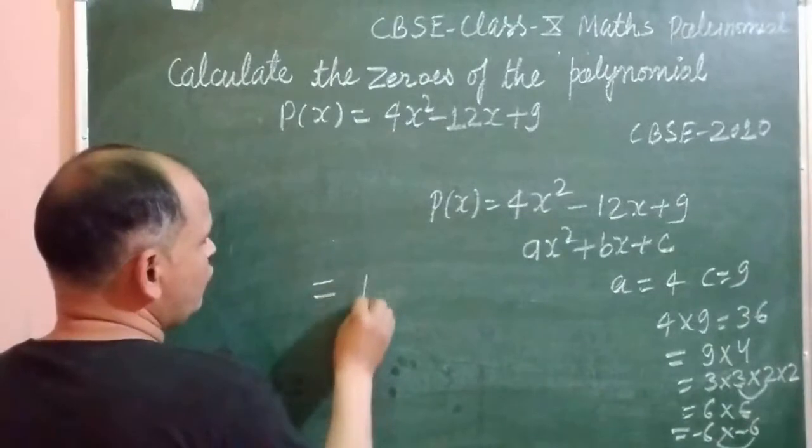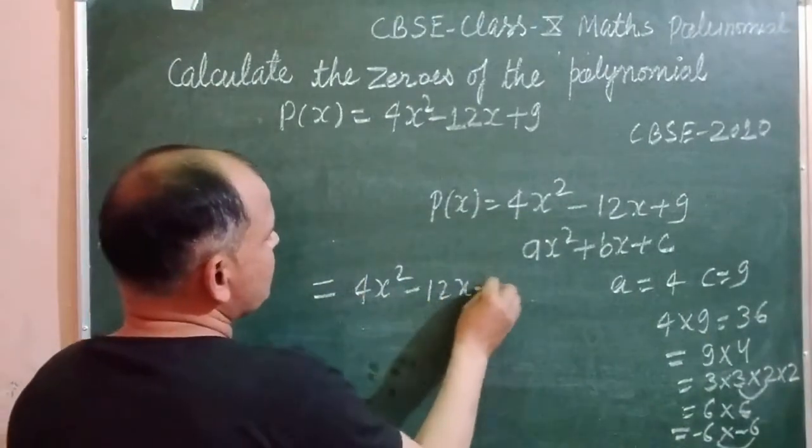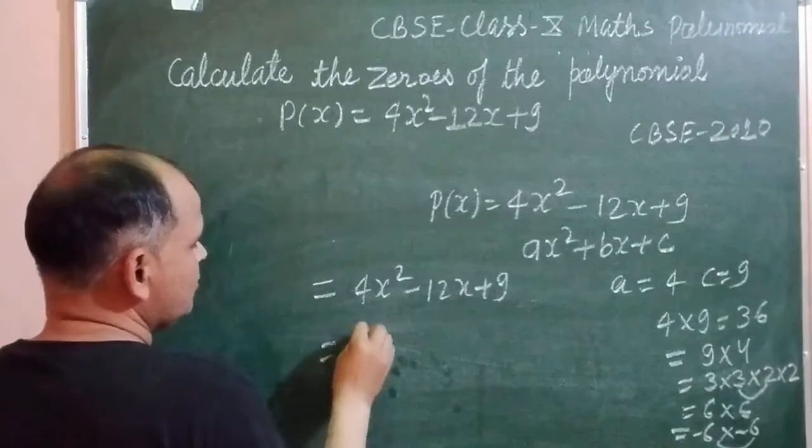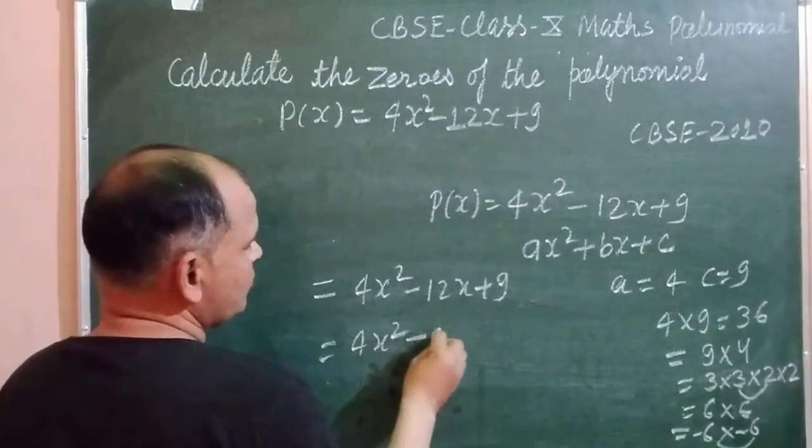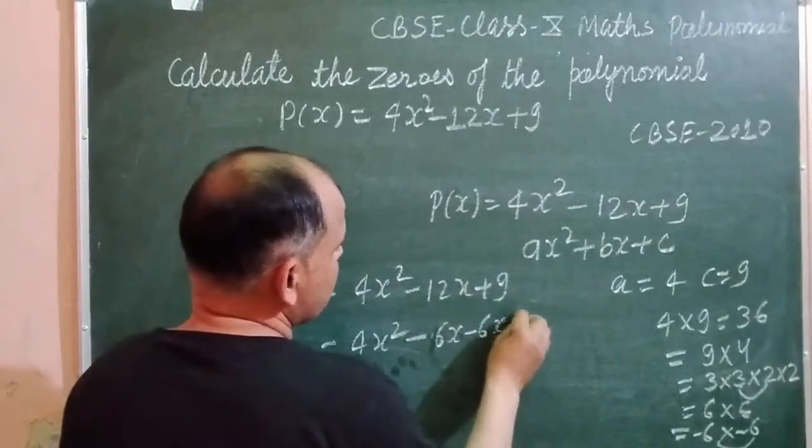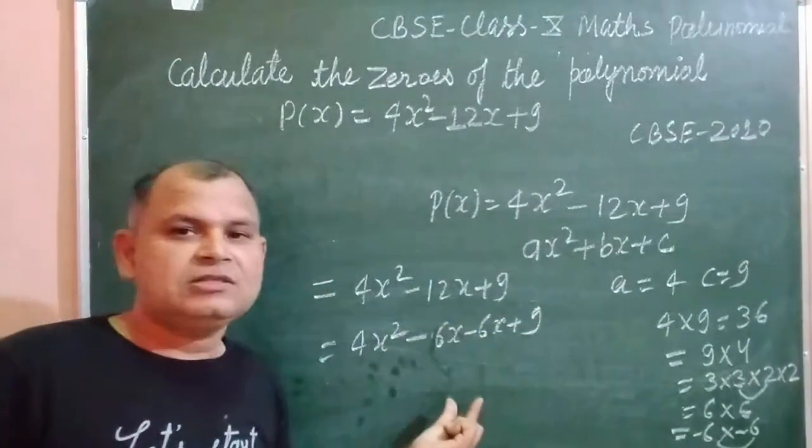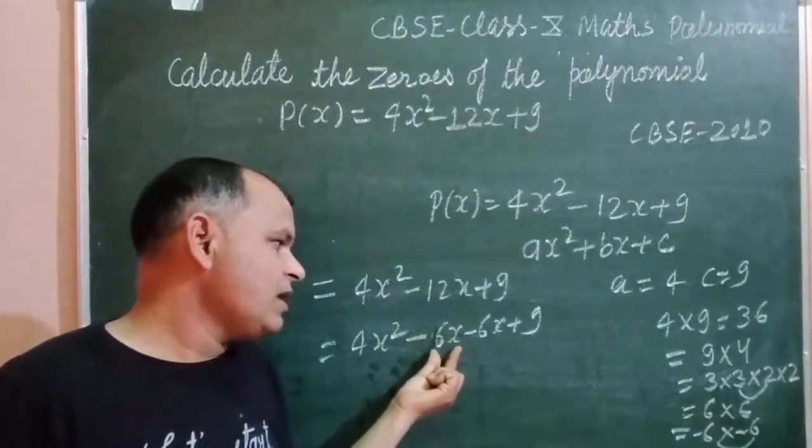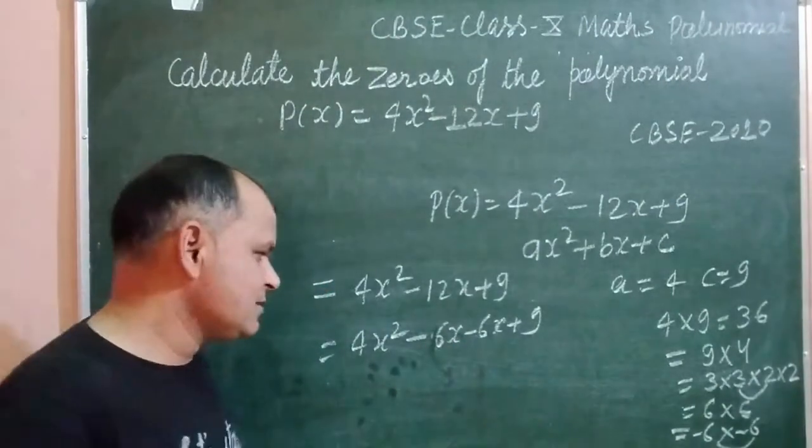Therefore, 4x² - 12x + 9 can be written as 4x² - 6x - 6x + 9. So 12x is split in two parts: minus 6x minus 6x.